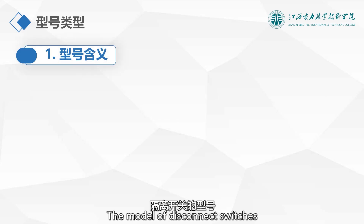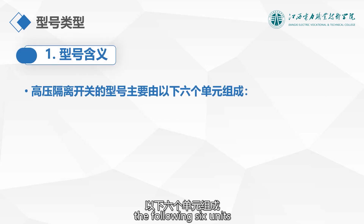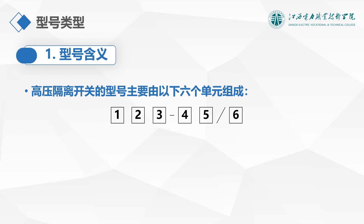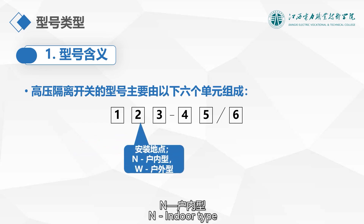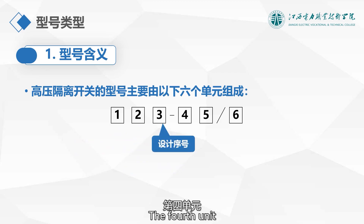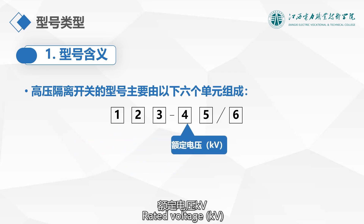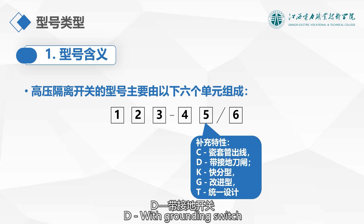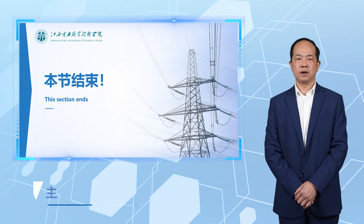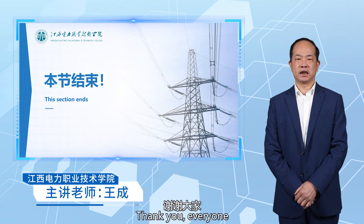The model of disconnect switches mainly consists of the following six units. The first unit is the product name: G for disconnect switch. The second unit is installation location: N for indoor type, W for outdoor type. The third unit is design sequence. The fourth unit is rated voltage in kV. The fifth unit is supplementary characteristics: C for porcelain bushing outlet, D for with grounding switch, K for quick break type, G for improved type, T for unified design. The sixth unit is rated current in A. This concludes today's lesson. Thank you everyone.